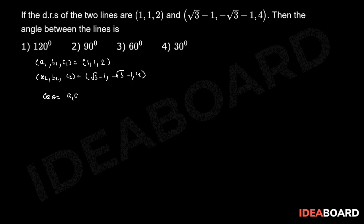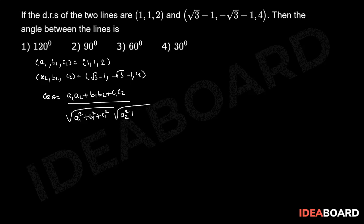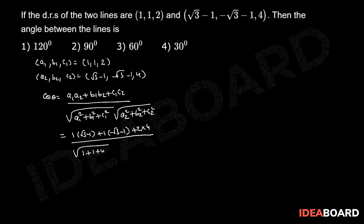Therefore, cos θ = (a1·a2 + b1·b2 + c1·c2) / (√(a1² + b1² + c1²) · √(a2² + b2² + c2²)). That equals to 1·(√3 − 1) + 1·(−√3 − 1) + 2·4, divided by √(1 + 1 + 4) · √((√3 − 1)² + (−√3 − 1)² + 16).